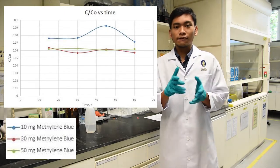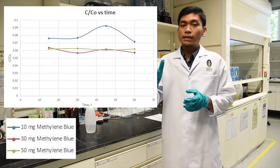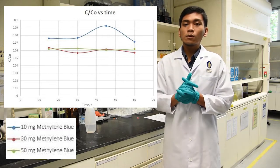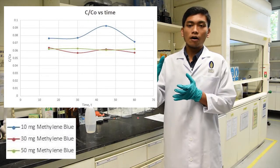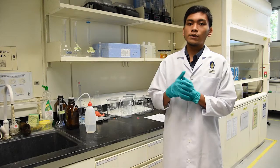While for 30 and 50 mg per liter of methylene blue in the solution, the breaking point is observed at t equals to 15 minutes, since after 15 minutes, the concentration of the methylene blue left in the solution is fluctuating.